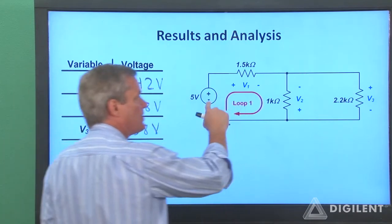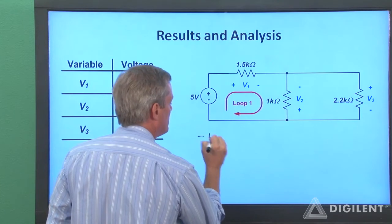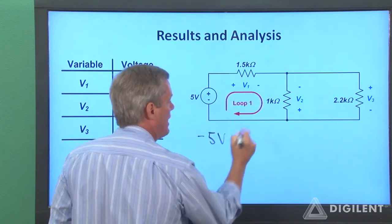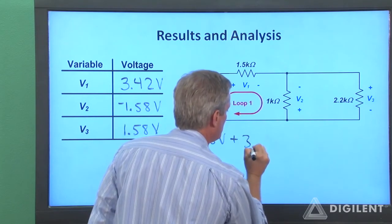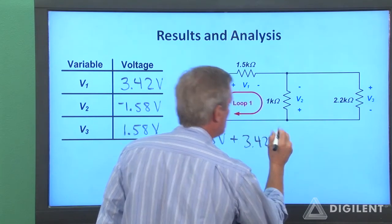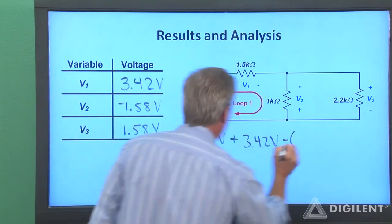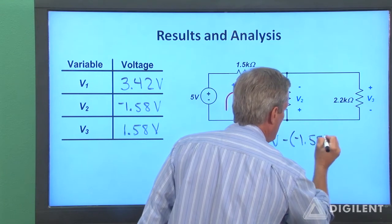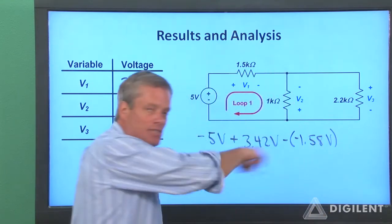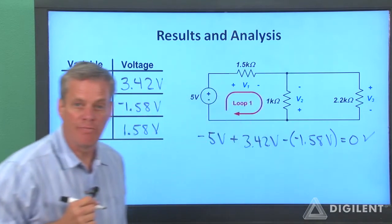Our first loop starts out, I'll start here. It'll be negative 5 volts plus V1, which is 3.42 volts. I see a minus sign on V2 first. I subtract that off, so it's minus a minus 1.58 volts. Turns out that sums up exactly to zero. We can't do much better than that.